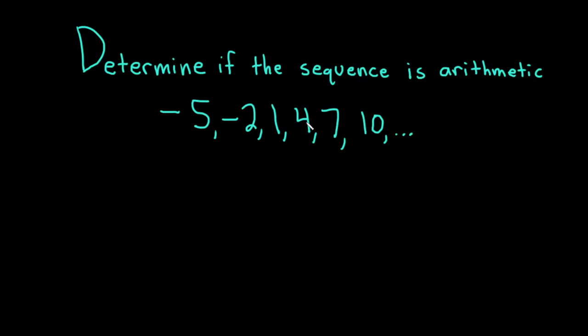Hi, in this video we're going to determine if the sequence is arithmetic. Our sequence is negative 5, negative 2, 1, 4, 7, 10, and the three dots indicate that it keeps going forever.